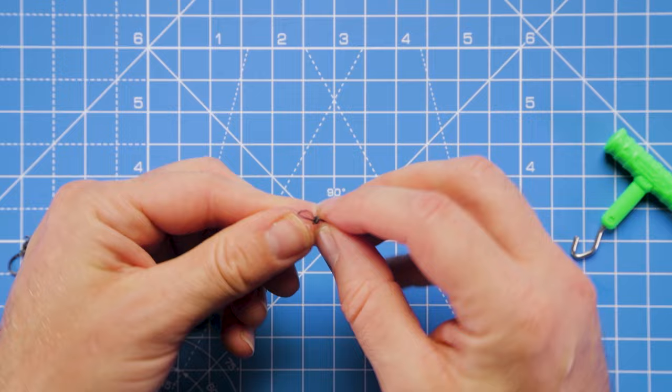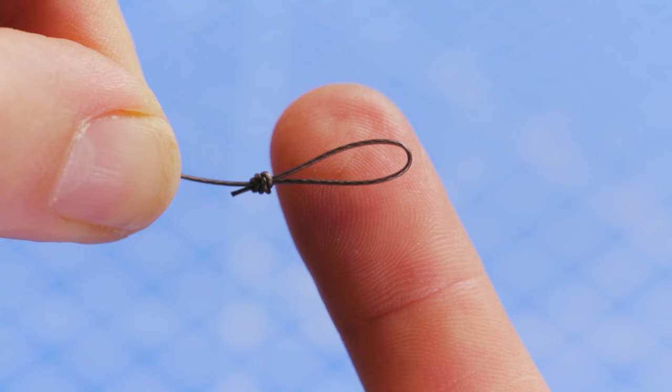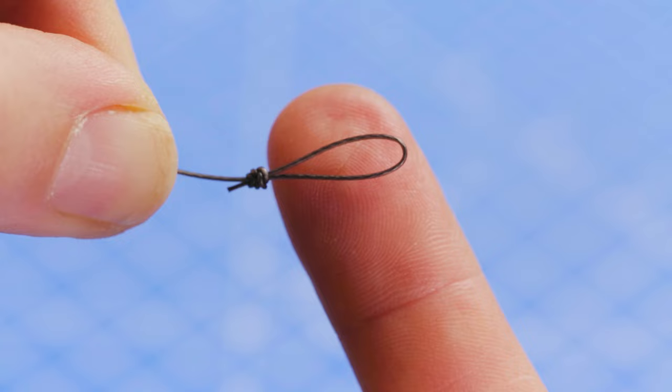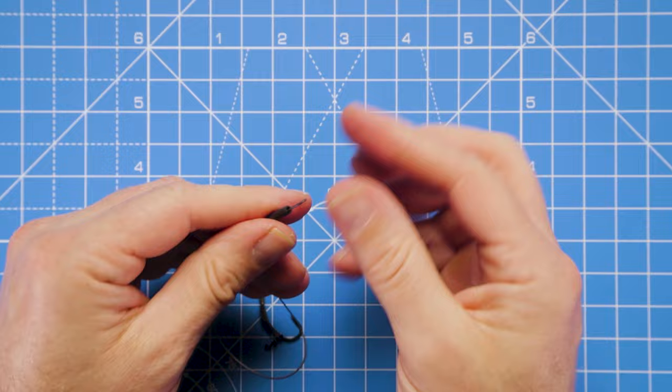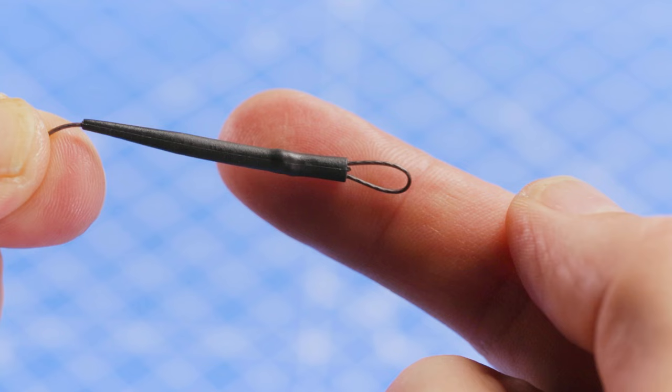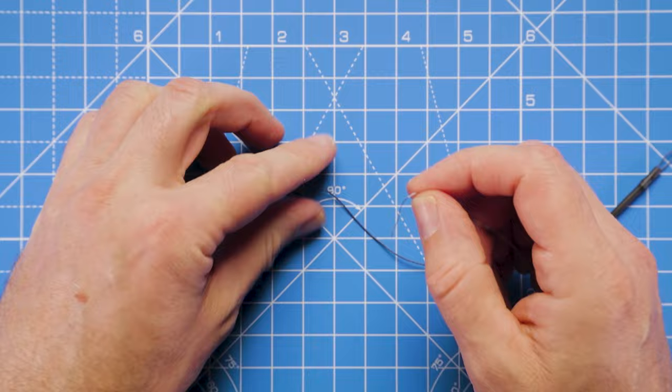So all we need to do now is just trim off that tag end, don't need that, just get rid of that. There we go, we've got a nice loop there so we can attach it to a quick change swivel. So now just take that anti-tangle sleeve we added to the hook link earlier on, feed it up over that knot, and there we go, got a nice neat loop knot ready for attaching the rig.